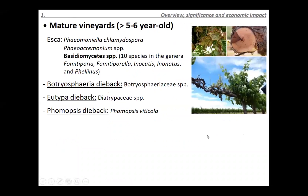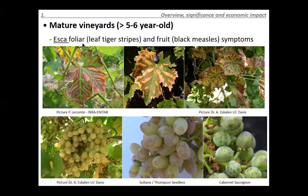In mature vines, the ESCA complex is caused by similar or the same pathogens as Petri disease, with the key difference being the association of Basidiomycetes — the mushroom-type fungi. Symptoms of ESCA in mature vines include foliar 'tiger stripe' symptoms that are very characteristic and easy to spot in the vineyard — interveinal scorching of the leaves. In the fruit, we see what's called 'black measles,' with necrotic areas caused by secondary metabolites or toxins produced by the fungi that are translocated and expressed in the fruit. This is a significant problem for table grape growers.